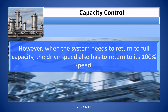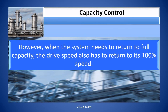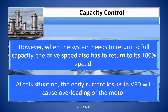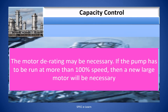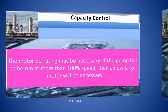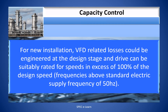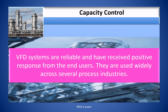However, when the system needs to return to full capacity, the drive speed must also return to 100% speed. At this point, eddy current losses will cause overloading of the motor, and motor re-rating may be necessary. If the pump has to run at more than 100% speed, a new larger motor will be necessary. For new installations, VFD-related losses can be engineered at the design stage, and the drive can be suitably rated for speeds in excess of 100% of the design speed. VFD systems are reliable and have received positive response from end users, and are used widely across several process industries.